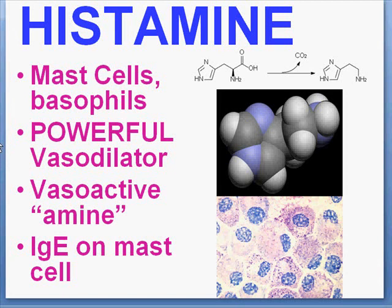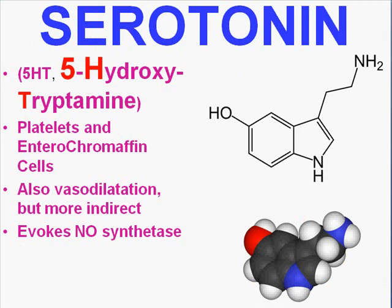Histamine is the main substance to cause the early vascular effects of acute inflammation. The whole science of combating this natural process is called the pharmacology of antihistamines — why we want to counteract what took millions or billions of years to develop, I don't know — but histamine is the main thing to cause vasodilatation.